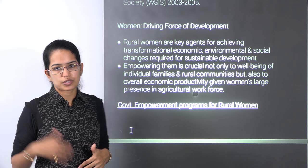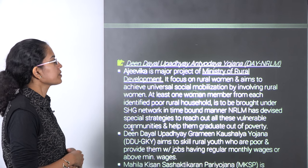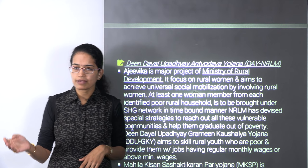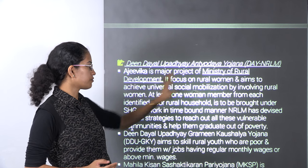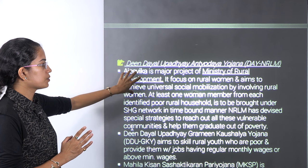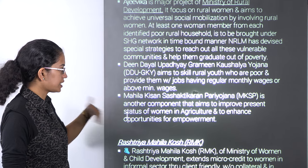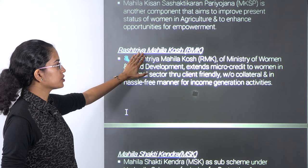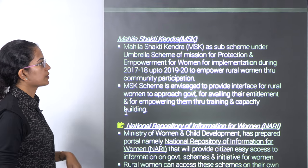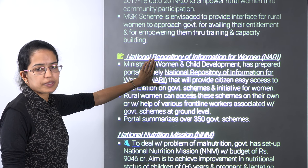For women empowerment mainly in rural areas, we have the Deendayal Upadhyaya program. Under this, the Ajeevika program is run by the Ministry of Rural Development — not the Women and Child Development Ministry. At least one woman member from each poor rural household would be brought under the self-help group network. Rashtriya Mahila Kosh aims to extend microcredit facilities to women in the informal sector. Mahila Shakti Kendra is an umbrella scheme for protection and women empowerment. The National Repository of Information for Women — NARI — provides citizens access to various government schemes.